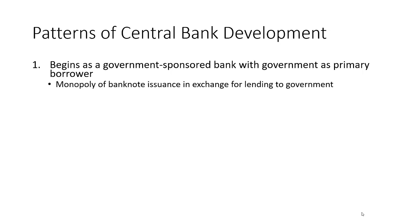Government will give this kind of bank a monopoly of banknote issuance in exchange for commitments to lend funds to the government. That is the pattern seen most starkly with the Bank of England in the late 1600s, and then also the Bank of France in the early 1800s. So that's pattern one.